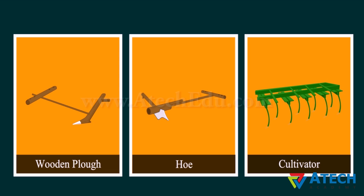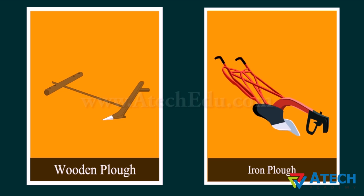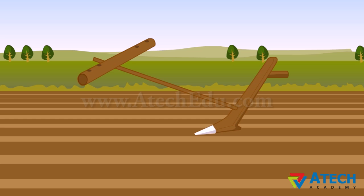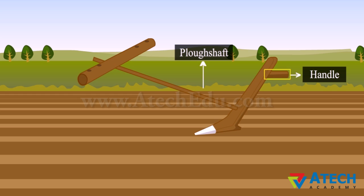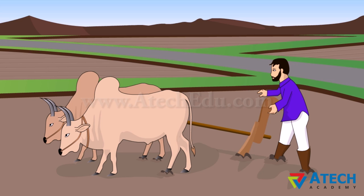A plow is usually made of wood, though metal plows are also used today. The main part is called the plow shaft, with a handle attached to it. There is also a beam attached to the plow shaft, which is placed on the neck of the animal pulling the plow. The triangular iron fluke is called the plowshare. Usually bulls are used to pull a plow, but horses and camels can also be used depending on availability.